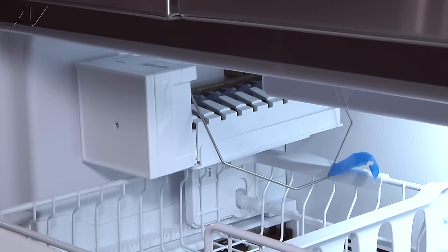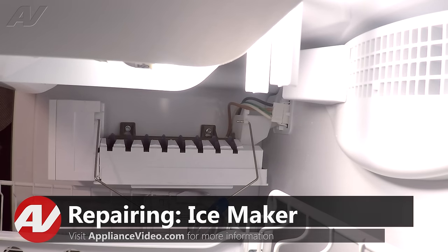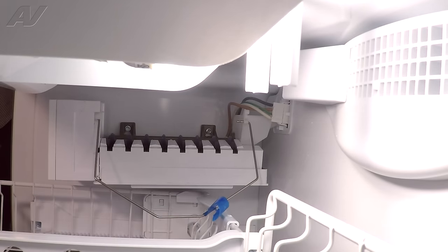Next you always want to make sure that your freezer is cold enough to produce ice. Freezers should maintain temperature around 0 to 5 degrees. We'll produce ice up to about 15 degrees. You might get a little slow production around that temperature. But we are cold enough in our freezer so we can eliminate that possibility.